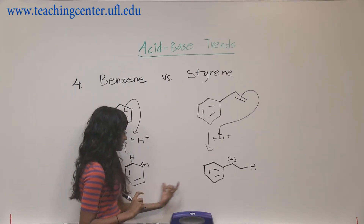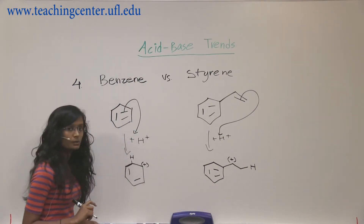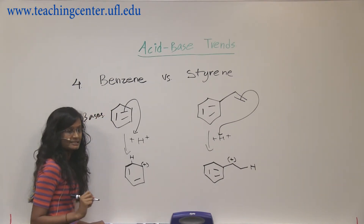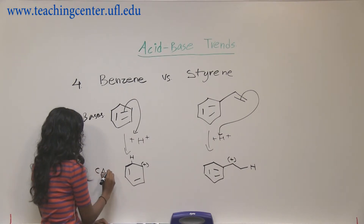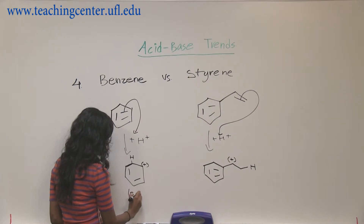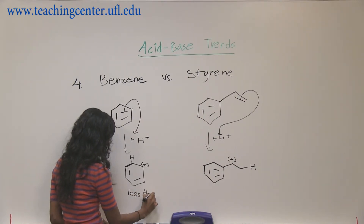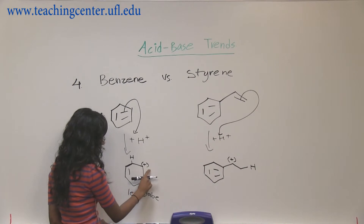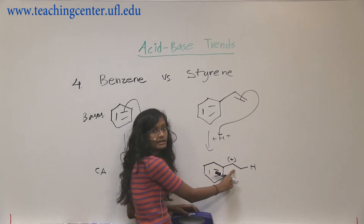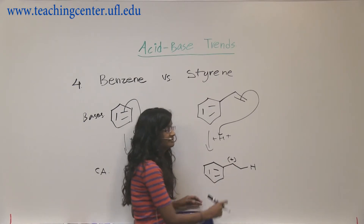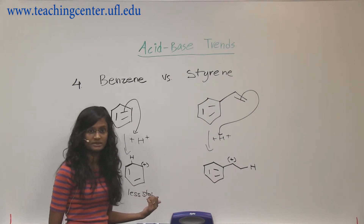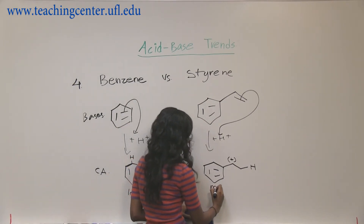Now evaluating these two — keep in mind these are bases, so these intermediates are conjugate acids. For benzene, we broke the aromaticity, so this conjugate acid is very, very bad — it has to be less stable. The carbocation on the styrene side is allylic, but the carbocation on the benzene side is benzylic. Benzylic is more stable than allylic, but we already know benzene's conjugate acid is less stable overall because we broke the aromaticity. So styrene's conjugate acid is more stable.